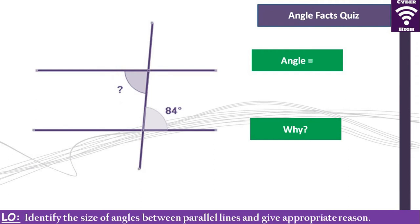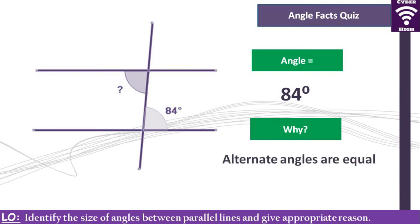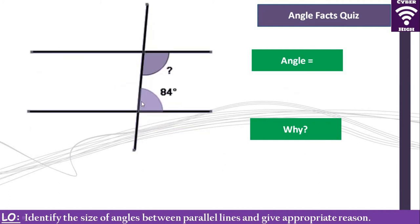What is the size of the angle marked with a question mark? We have been given 84 degrees, and this is also 84 degrees. Why is it 84? In your final exam, if you give the size without the reason you lose a mark. The reason is: these are alternate angles, and alternate angles are equal.